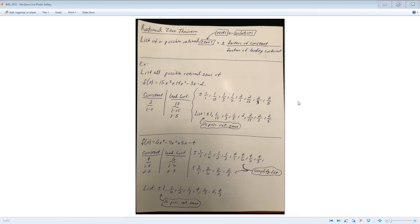So let's look at the first example. List all possible rational zeros of 15x cubed plus 14x squared minus 3x minus 2. So my constant is 2, my leading coefficient is 15. So the factors of 2 are just 1 times 2, factors of 15 is 1 times 15 and 3 times 5.